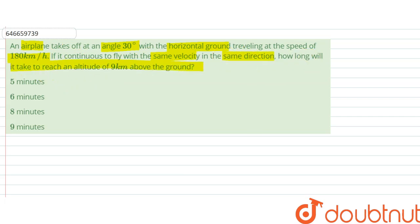So what are we given is a 30 degree angle with the horizontal. The airplane takes off with the horizontal ground at a speed of 180 kilometers per hour.